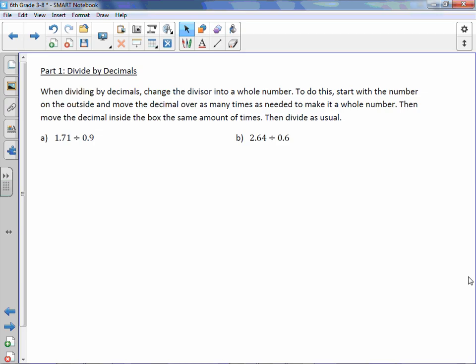When dividing by decimals, you change the divisor into a whole number. To do this, start with the number on the outside and move the decimal over as many times as needed to make it a whole number. Then move the decimal inside the box the same amount of times. Then divide as usual.